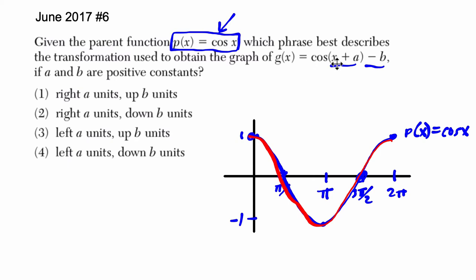So when we add to the input of a function, we actually move left a units. And this is for all functions. If you add to your input, it actually goes left. And then if we subtract from our function, from the output of the function, it moves down. So essentially, it should go left and then down. We should go left a units and down b units. And this is something that we talk extensively about in function transformations.